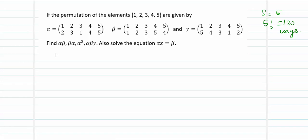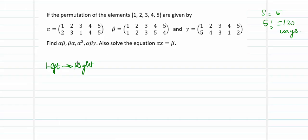You will have to keep in mind that we are going to follow the composition order from left to right. This is going to be the order in which the compositions are going to be performed. Now let us take the first question, namely alpha beta. What is going to be alpha beta?